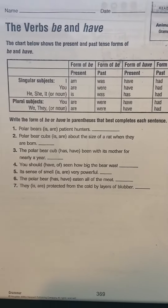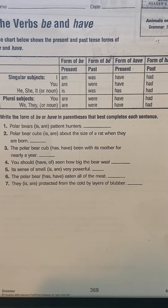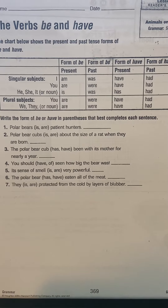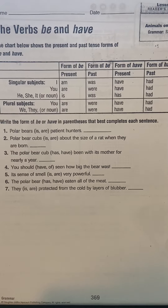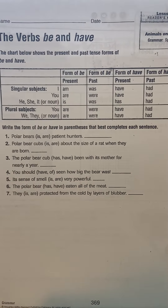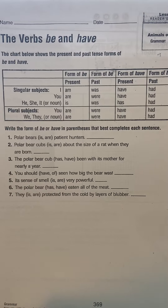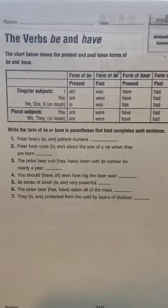So it says write the form of be or have in parentheses that best completes each sentence. So number one: polar bears — is or are — patient hunters. Which form would you use? Is or are patient hunters?